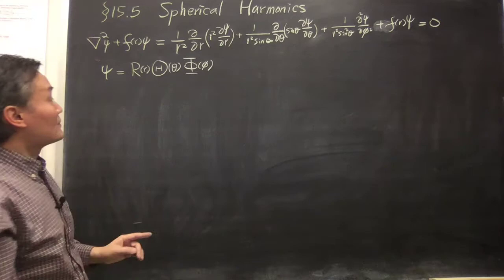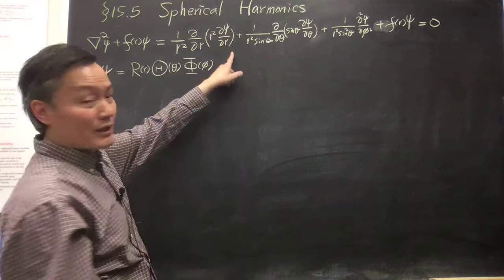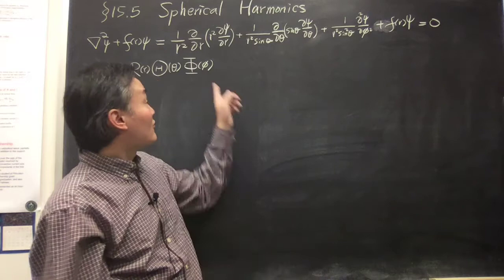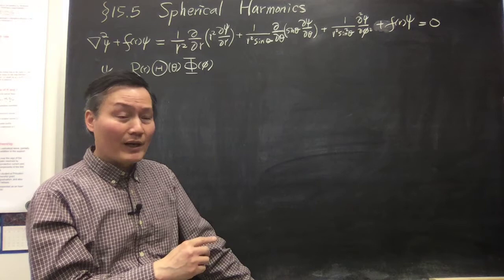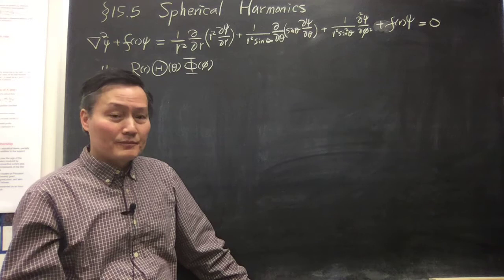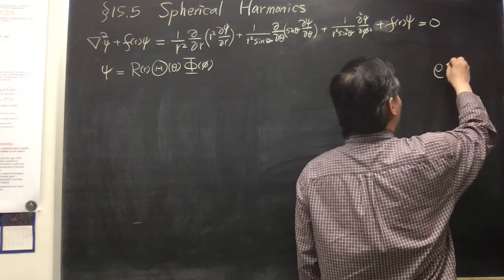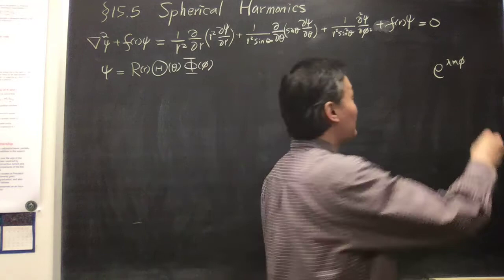After we substitute into the equation, we find the equation for R, theta, and phi — these three functions. Considering a problem that includes the whole range of phi from 0 to 2π, the phi function is solved by trigonometric functions — either sine or cosine — or in compact form, exponential function e^(imφ) for integer m, including both positive and negative integers.